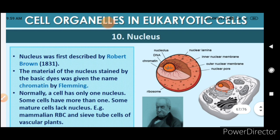In mammalian RBCs, the nucleus is absent because hemoglobin needs maximum space inside the cell. If a nucleus were present, hemoglobin would not have enough space, and hemoglobin is necessary for oxygen transport. So to minimize space usage, the nucleus in RBCs is absent, allowing hemoglobin to occupy maximum space.